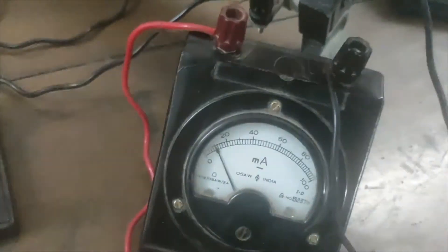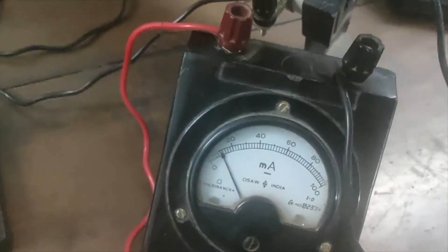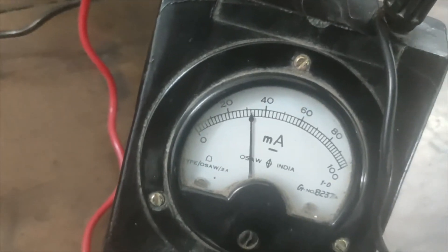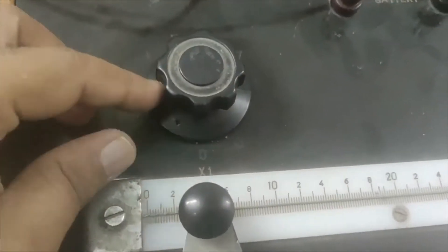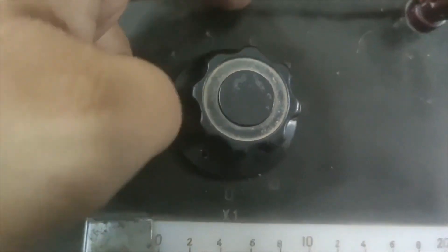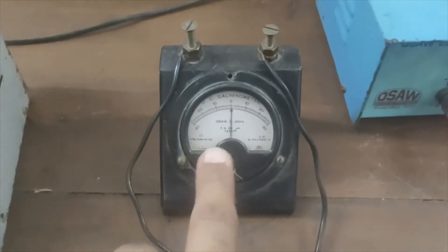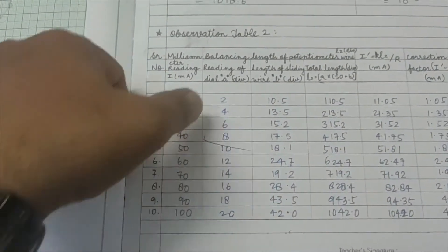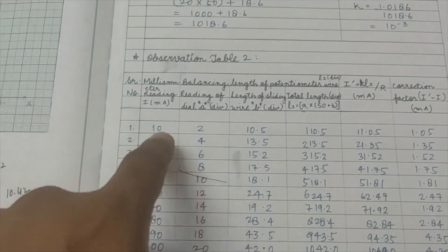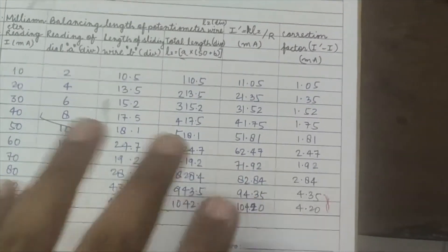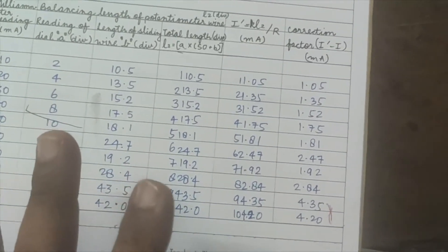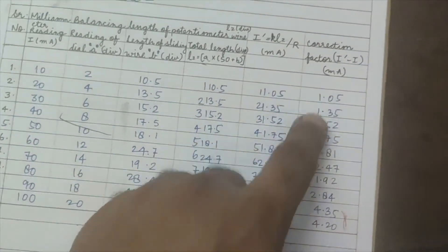Similarly, we keep increasing the milliammeter reading from 10 to 20, 30, 40, and so on up to 100 mA. For each reading, using dial positions 1, 2, 3, 4, 5, 6, we find the balancing length by getting null deflection on the galvanometer, then calculate L2 divided by 10 and apply the correction factor.